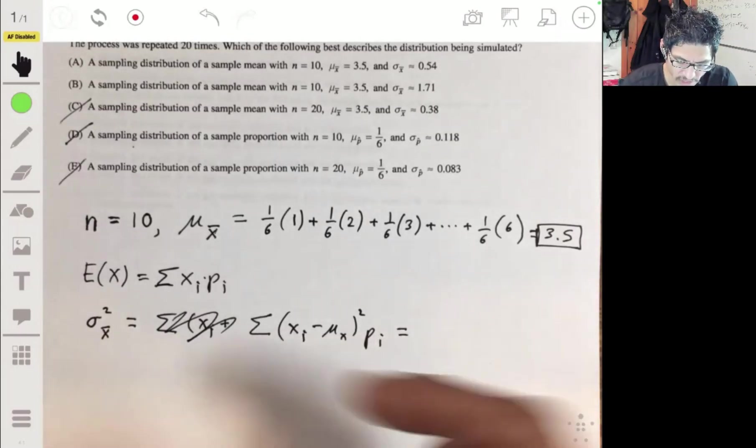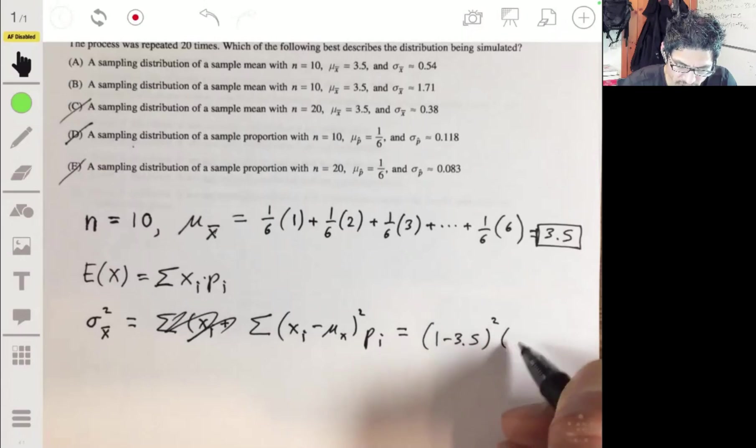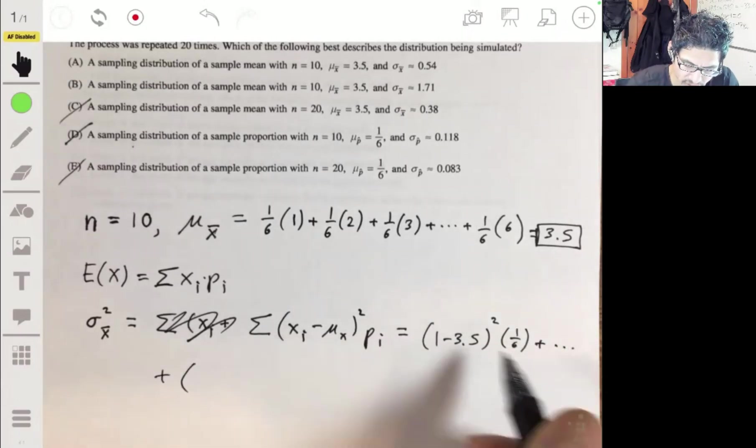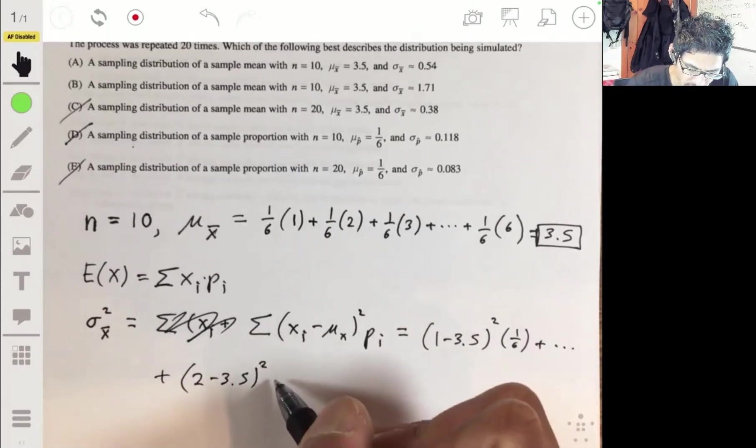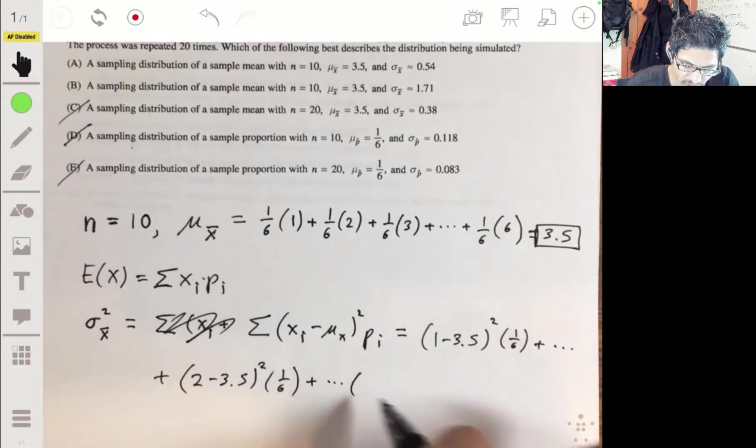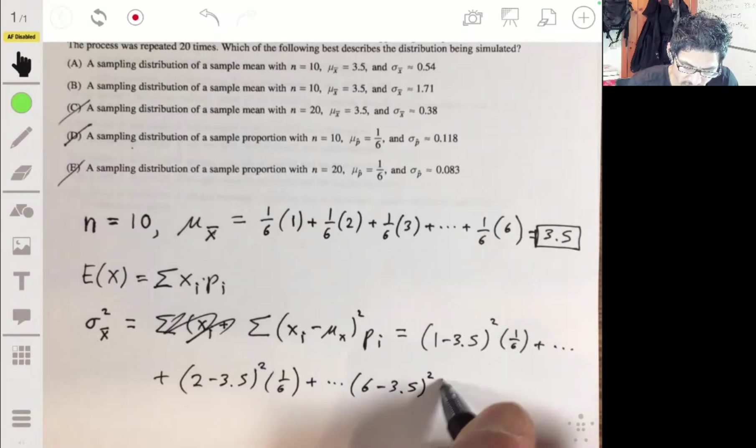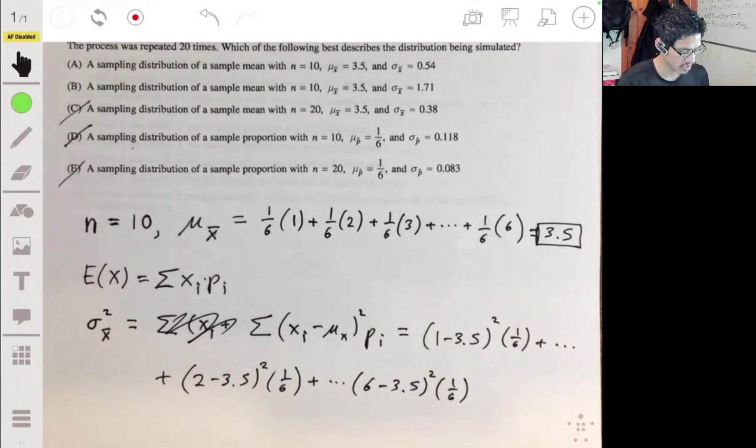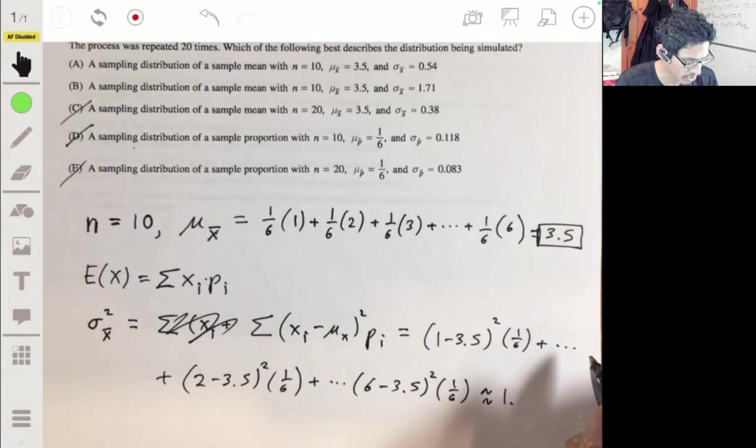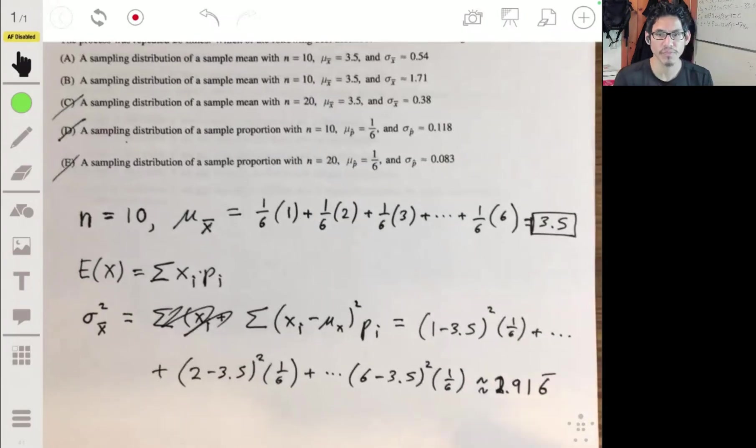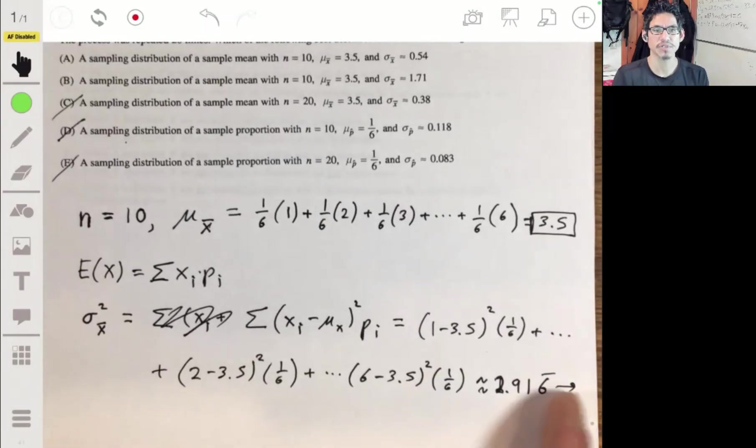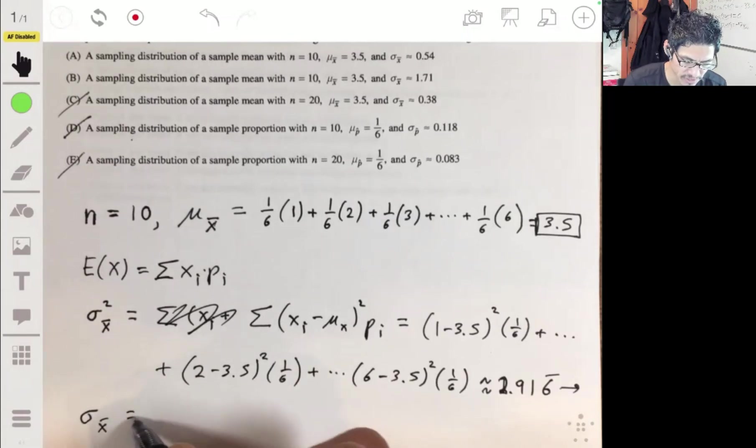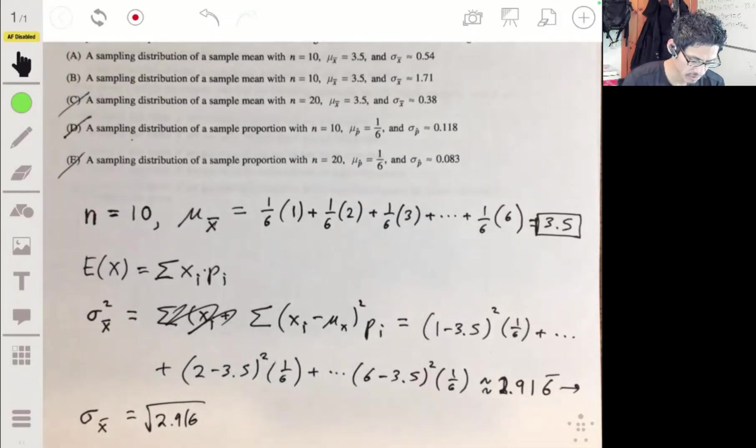This would start off as 1 minus 3.5 squared times 1/6 plus 2 minus 3.5 squared times 1/6, all the way until you get to 6. 6 minus 3.5 squared times 1/6. When you do this on your calculator, you're going to get 2.916-ish repeating. But remember now, this is the variance. Take the square root of this, because the standard deviation is the square root of the variance. The square root of 2.916 will give you about 1.71.